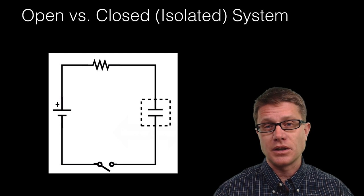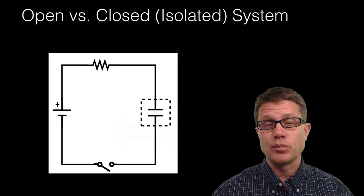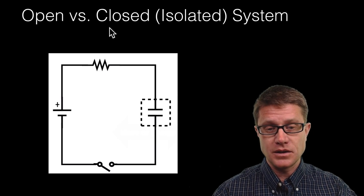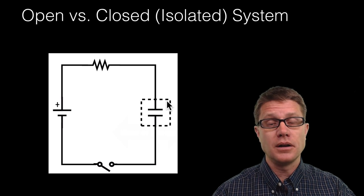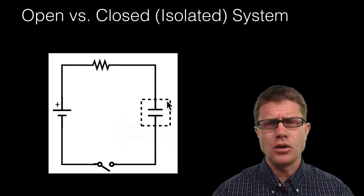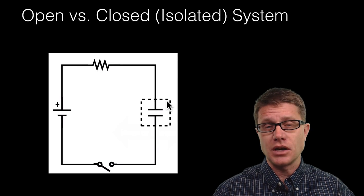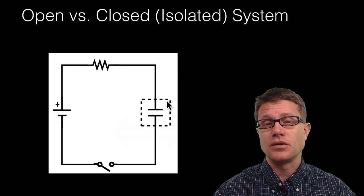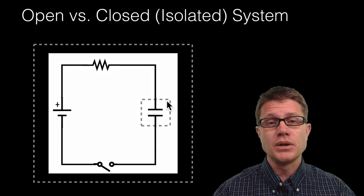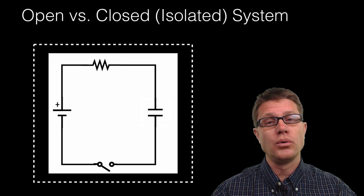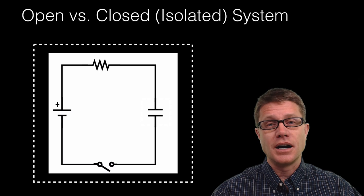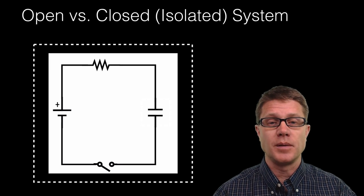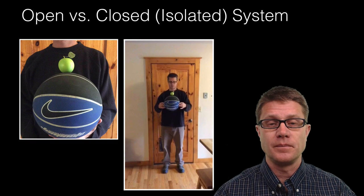So imagine I've got an electric circuit like this and the dotted line represents a system. So this system right here, would you say that's an open system or a closed system? Well it's going to be an open system because we clearly have energy coming in and energy going out. What would a closed system look like? It would be the whole circuit itself. Now it's hard to make something that's totally separated from the universe, but for solving a physics problem like this, this would be a great closed system.